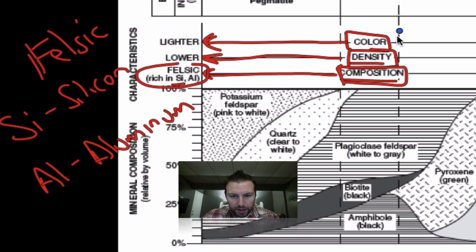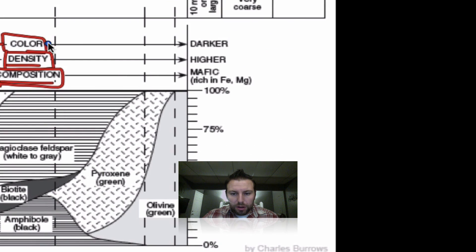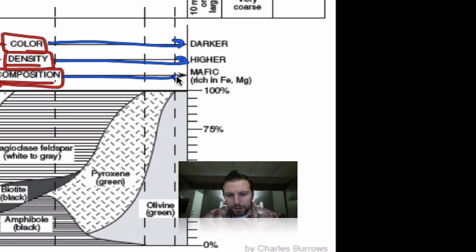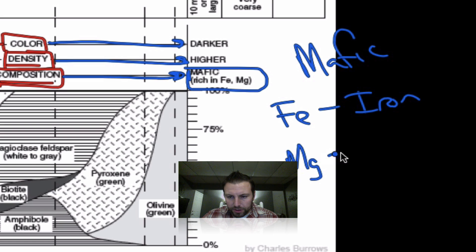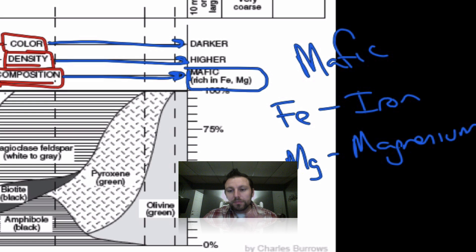We can go to the other side if it's really dark colored. We also know that it's going to have a higher density, and the elements making it up are going to be mafic — having Fe, which is iron, or Mg, magnesium. So just by knowing the color, we can get a broad idea of what it might be.